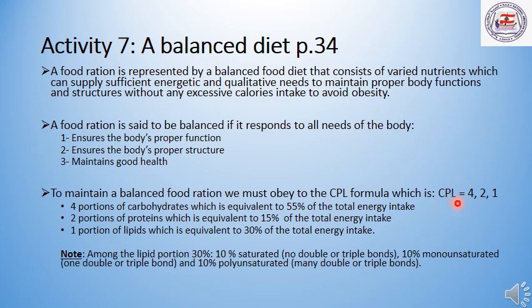The CPL formula must abide by the specific ratio of 4:2:1. This means four portions of carbohydrates, equivalent to 55 percent of the total energy intake; two portions of proteins, equivalent to 15 percent of the total energy intake; and one portion of lipids, equivalent to 30 percent of the total energy intake.